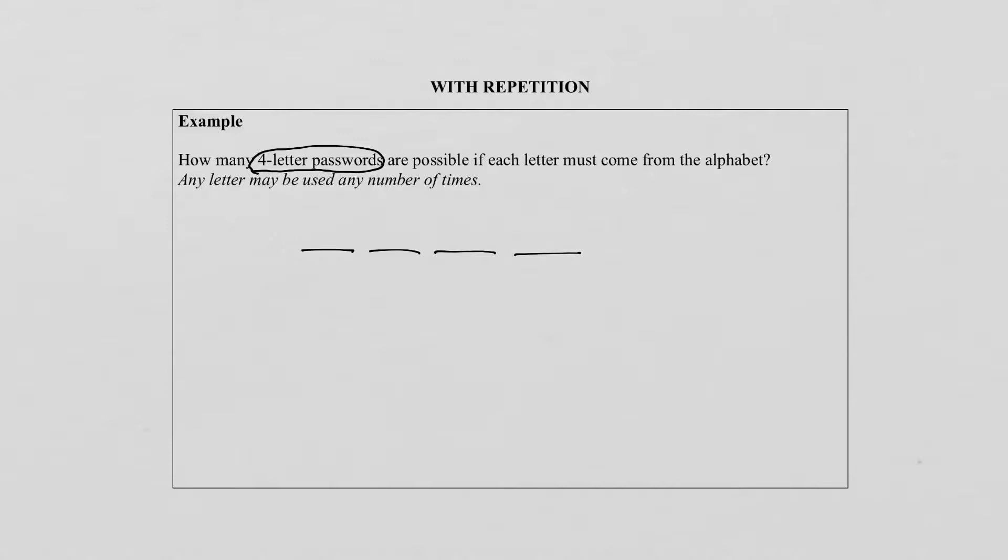The letters that we are allowed to use are the letters from the alphabet. Then we can use them any number of times. Now as you are aware there are 26 letters in the alphabet. So that means this position there are 26 possibilities. In this particular example it says that we can use the letters any number of times. So that means the second position will also be 26, the third position will also be 26, and the last position also 26.